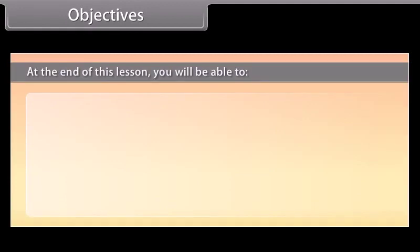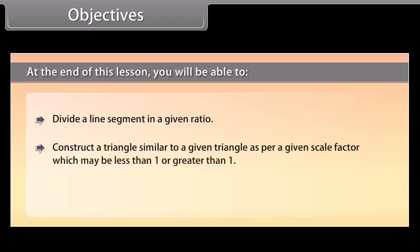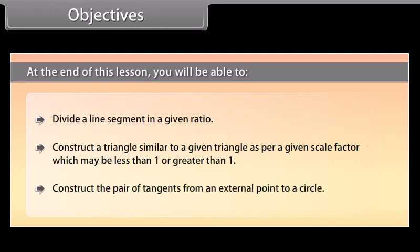At the end of this lesson you will be able to: divide a line segment in a given ratio; construct a triangle similar to a given triangle as per a given scale factor, which may be less than 1 or greater than 1; construct a pair of tangents from an external point to a circle.